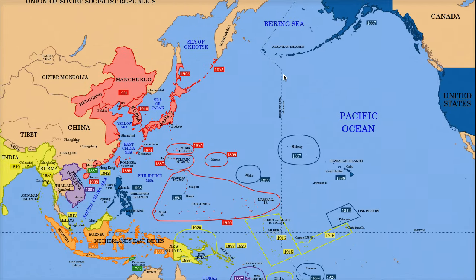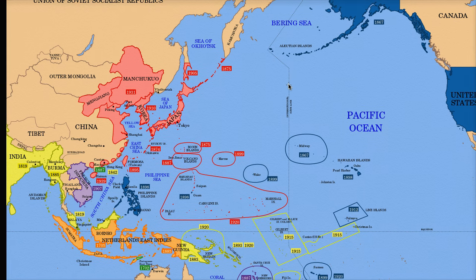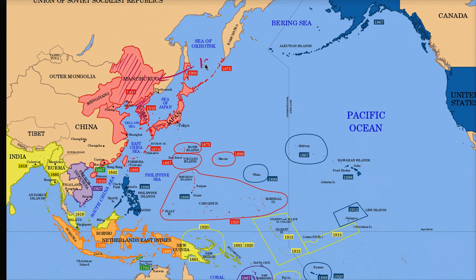If we go back even to the early 1900s, Japan is becoming more and more militaristic, more and more nationalistic. In the early 1900s, it had already occupied Korea as of 1910. And in 1931, it invades Manchuria — this right over here. This is in 1931. And it installs a puppet state, the puppet state of Manchukuo.